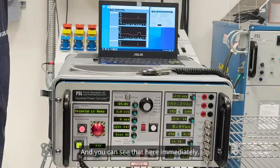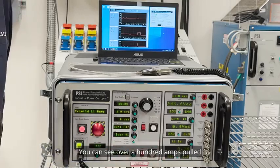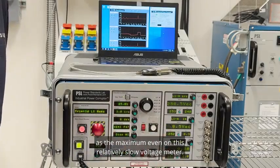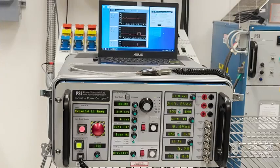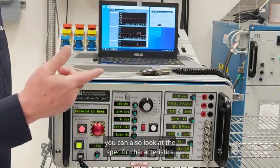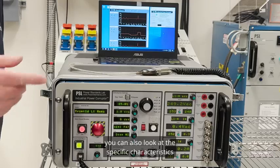And you can see that here immediately—you can see over a hundred amps pull as the maximum even on this relatively slow voltage meter. By downloading on channel scope you can also look at the specific characteristics.